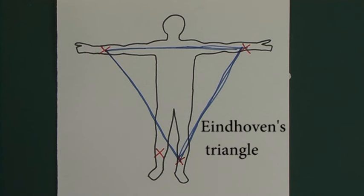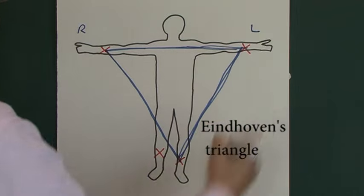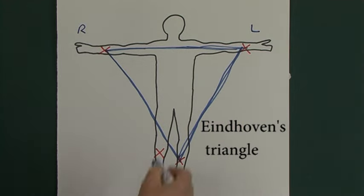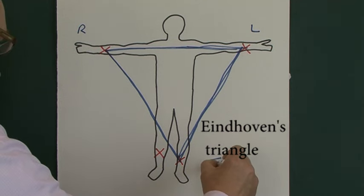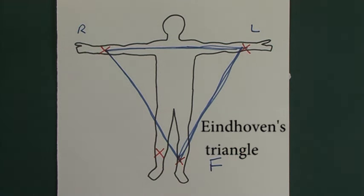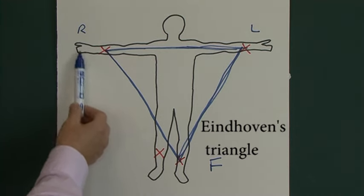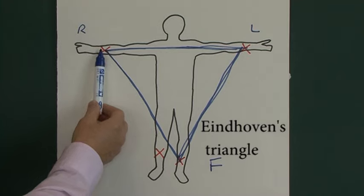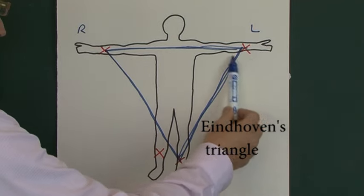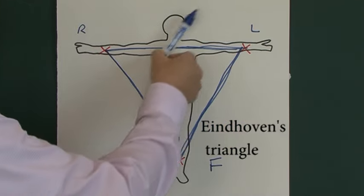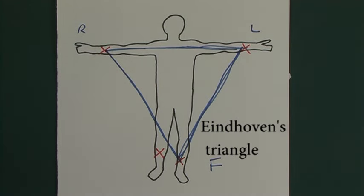So what we have here is an electrode on the right arm, an electrode on the left arm, and an electrode on the left leg, which we call the foot. We're picking up electrical impulses from these electrodes, and they are going away into our clever ECG machine.